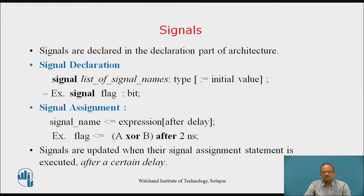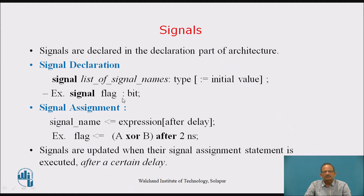Signals are declared in the declaration part of the architecture. Signals cannot be declared in the declaration part of a process — you can use signals in a process, but you cannot declare them there. Their declaration must be in the architecture in which that process exists. Signal declaration syntax: 'signal name : type := initial_value'. For example: 'signal flag : bit' declares flag as a signal of type bit.